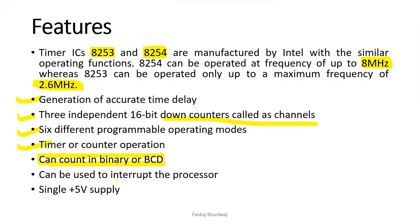The 8253/8254 can also be used to interrupt the processor. Similar to the 8255 interfacing IC, signals generated from the 8253 or 8254 can be sent to the microprocessor using interrupts, so the processor can halt its current processing and handle the interrupt. The device operates on a single +5V power supply.